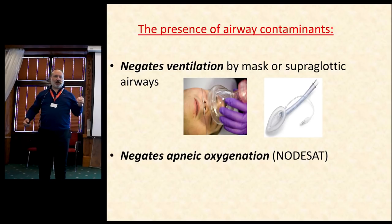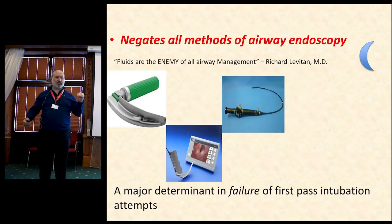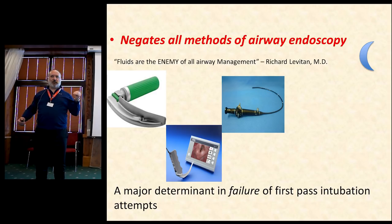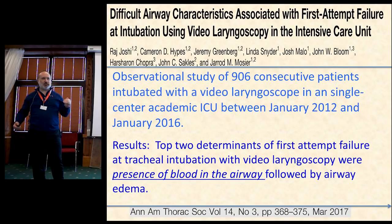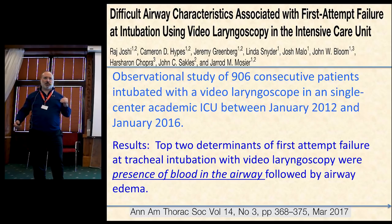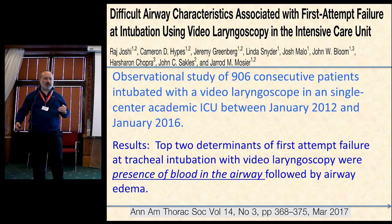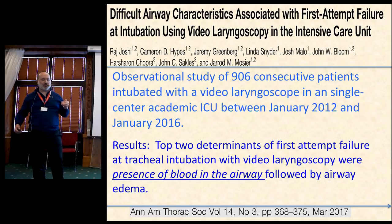As Rich was saying in the previous lecture, airway contamination negates your ability to ventilate by mask or supraglottic airway. It will negate your nasal oxygen, your apneic oxygenation, and all methods of airway endoscopy. It is a major determinant in the failure of first-pass success intubation attempts. This is the slide to photograph: from Cycles and Mosier at the University of Arizona in Tucson, four years prospectively with every single intubation in their ICUs done with video laryngoscopy — 906 consecutive patients. The top two determinants of first attempt failure were presence of blood in the airway followed by airway edema. Published March 2017 in the Annals of American Thoracic Society.